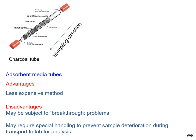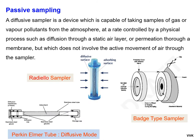The advantages of these methods are that they are less expensive. However, they may be subject to breakthrough problems and may require special handling to prevent sample deterioration during transport to the lab. A diffusive sampler is a device capable of taking samples of gas or vapour pollutants from the atmosphere at a rate controlled by a physical process such as diffusion through a static air layer or permeation through a membrane, without active movement of air through the sampler.